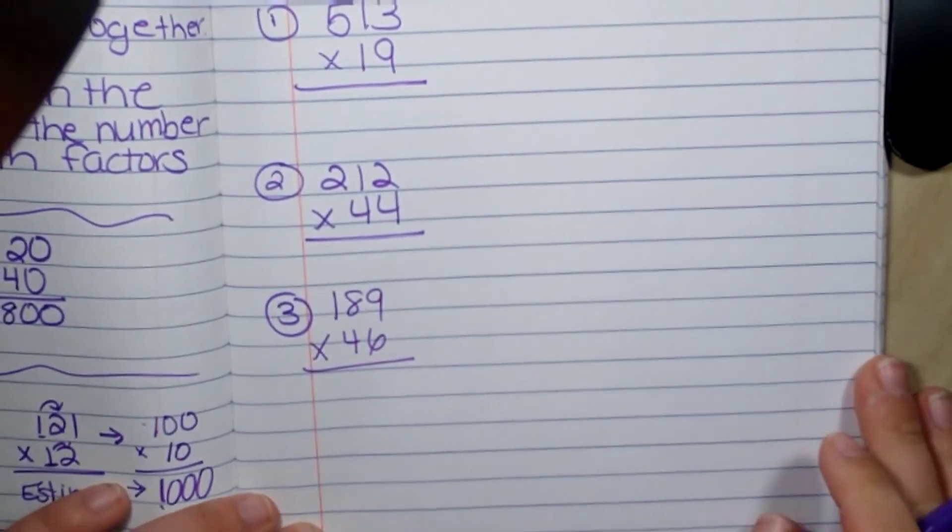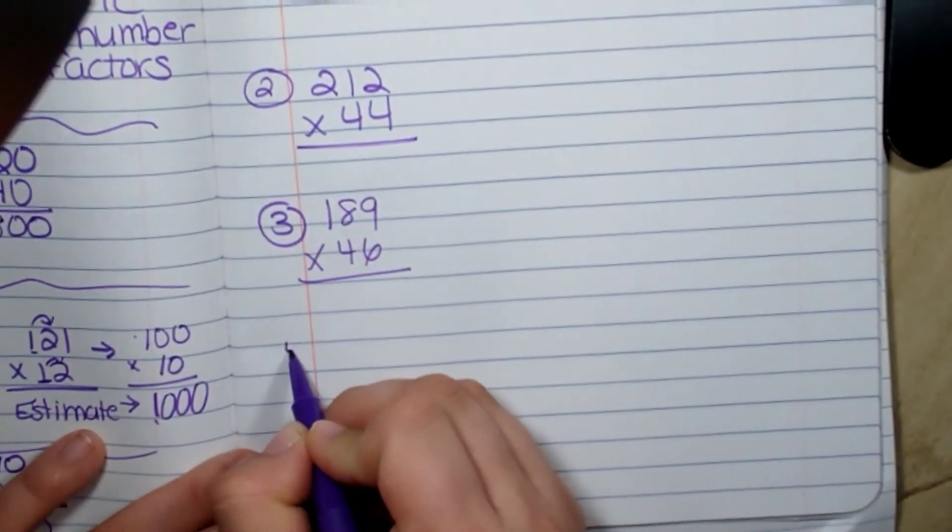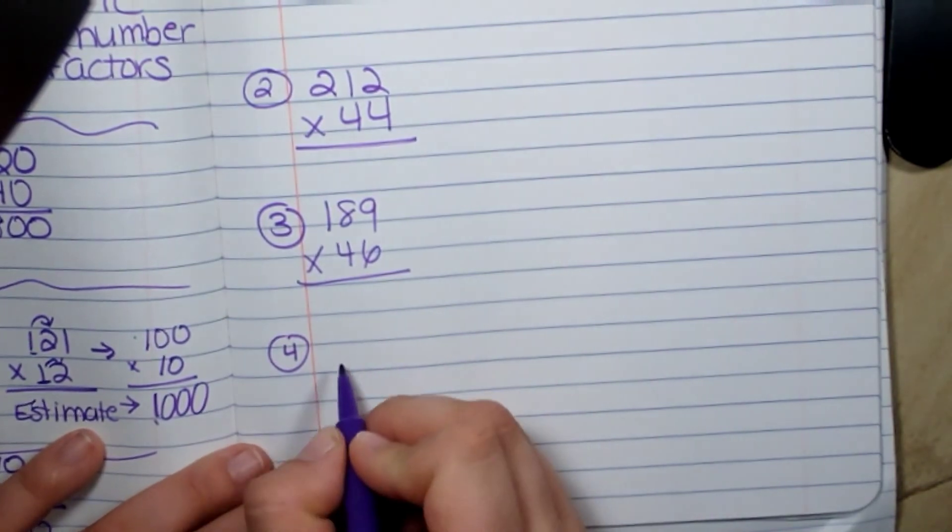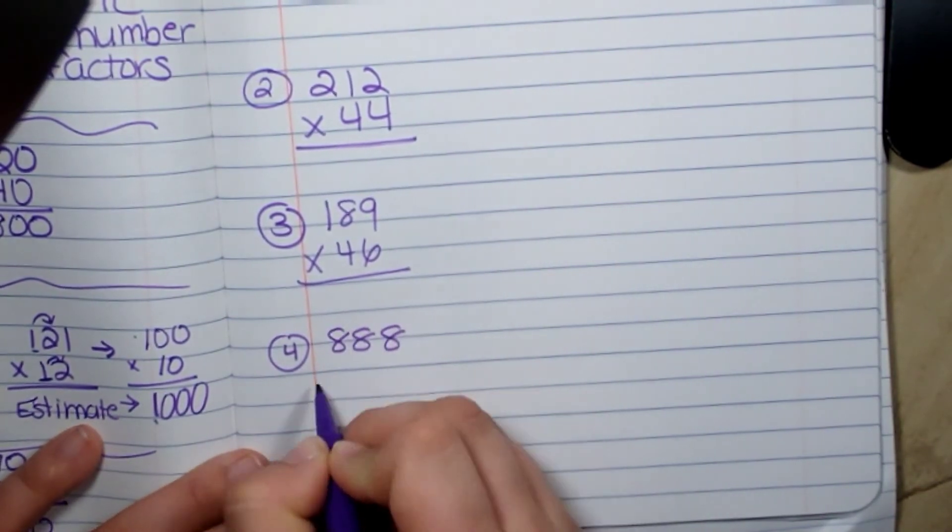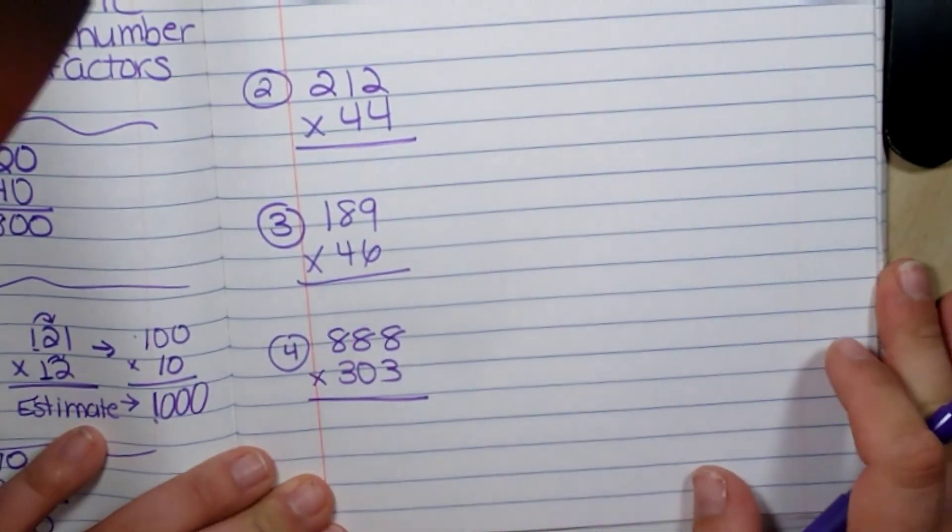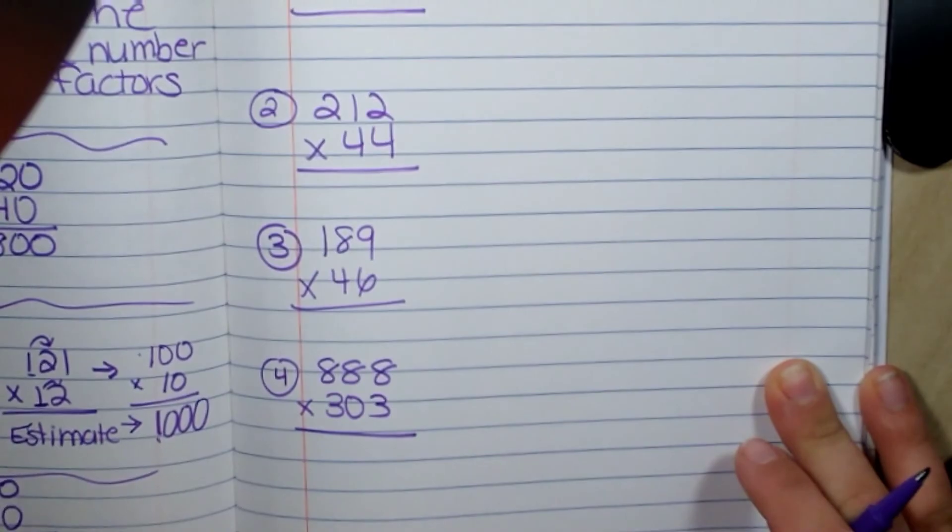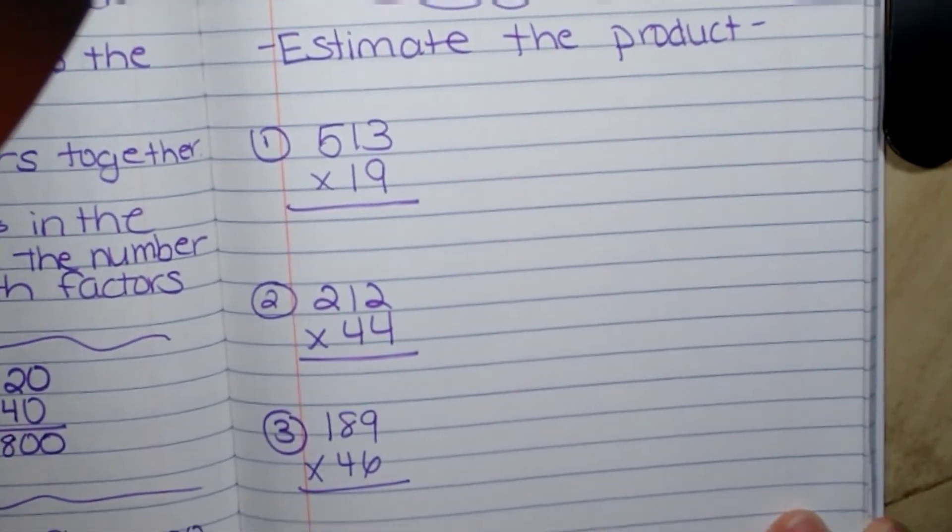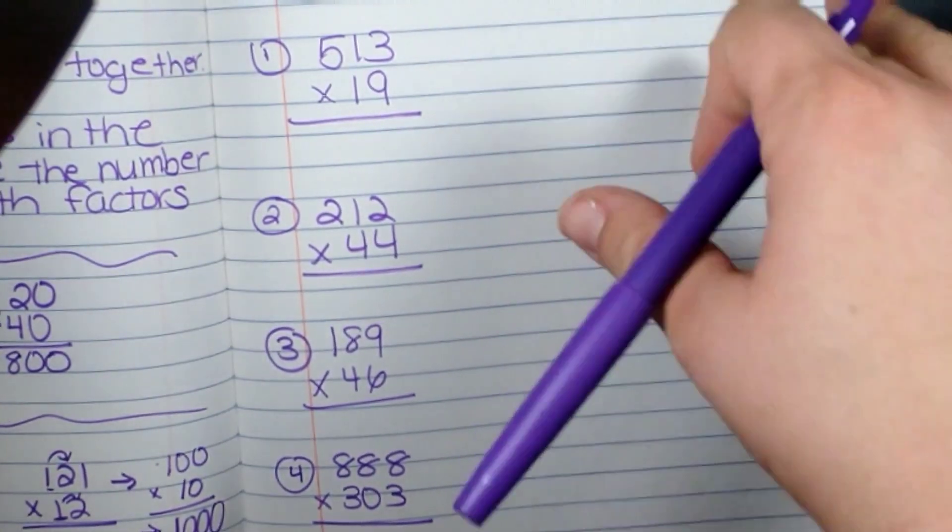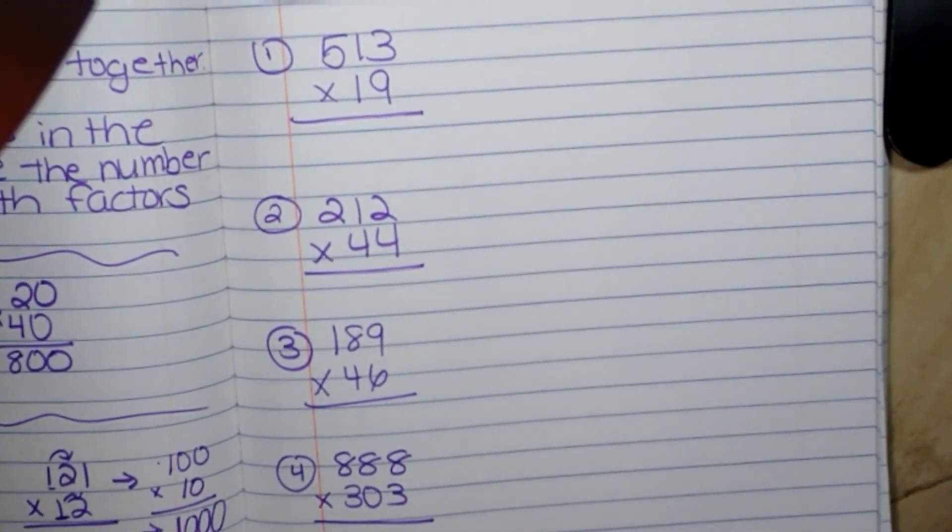And the last one will be eight hundred and eighty-eight times three hundred and three. So you're going to submit the answers to these four problems to the Schoology assignment, and then go work on your problems from Savas. Three point two.